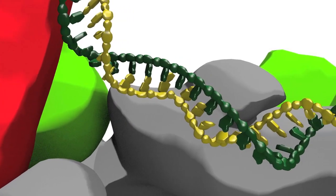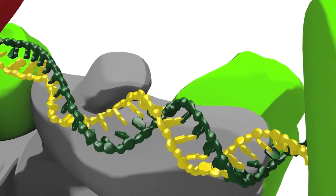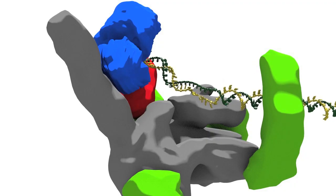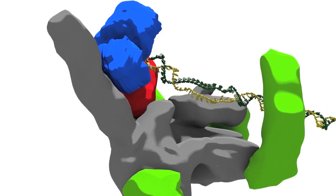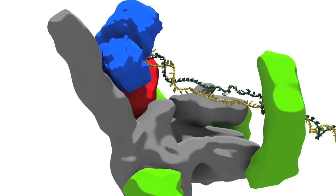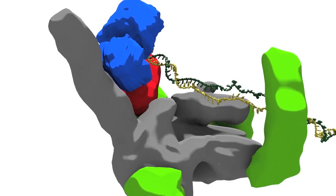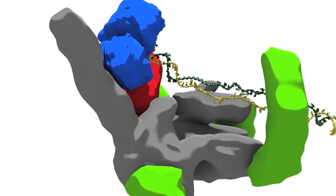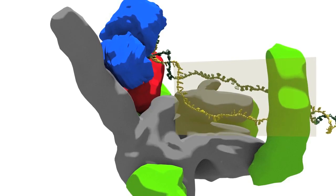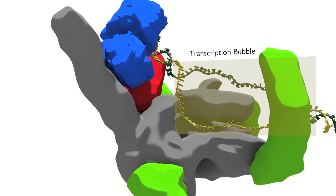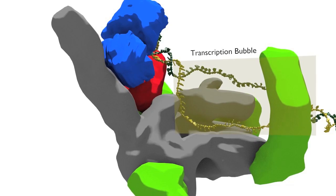This is the closed complex, meaning that the DNA is still double-stranded and the template strand has not yet been exposed. Transcription begins with a separation of the two DNA strands to form the open complex. This separation depends on TF2H, which uses energy from ATP hydrolysis to unwind the DNA and promote strand opening. The short stretch of DNA with unpaired strands is called a transcription bubble, and its opening exposes the template strand, which will be used to form a complementary RNA strand.